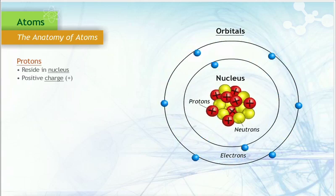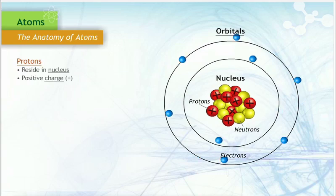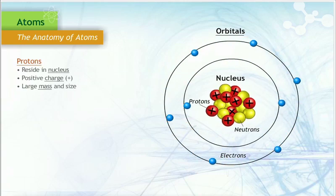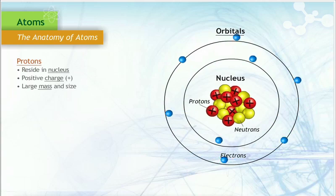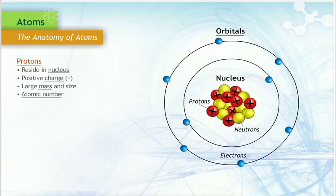Protons have a positive charge, which is denoted visually by using a plus sign. They are relatively large in size and mass. The number of protons in the nucleus of an atom is called the atomic number.